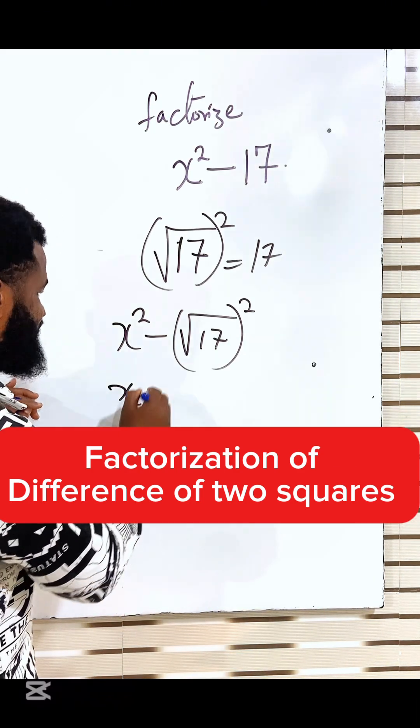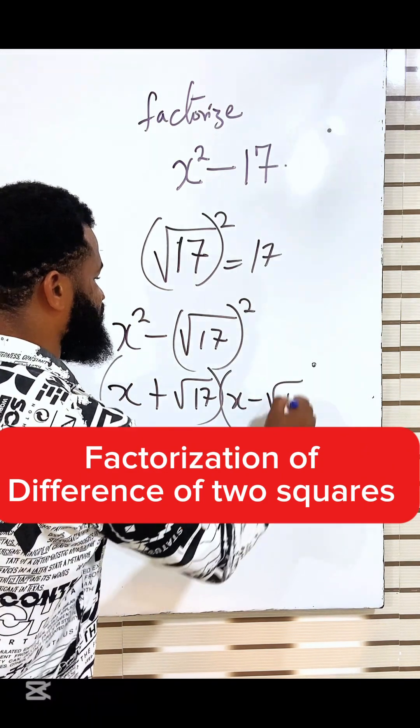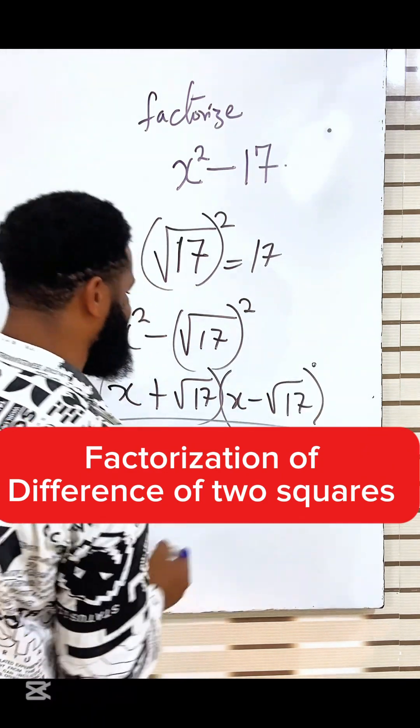So that is going to be x plus root 17, bracket, and x minus root 17, bracket. This is the answer.